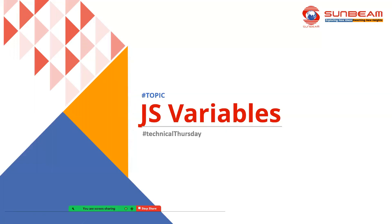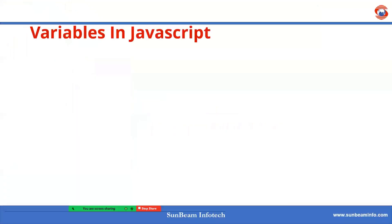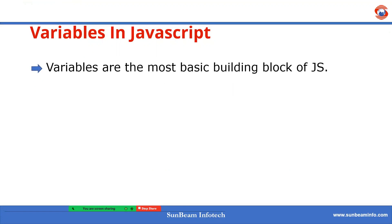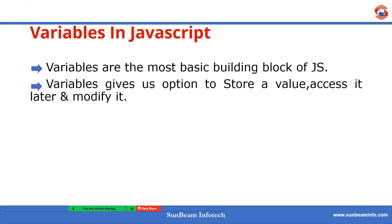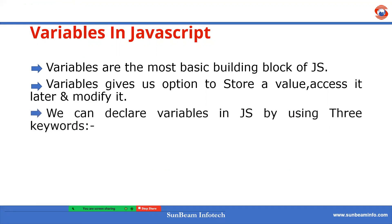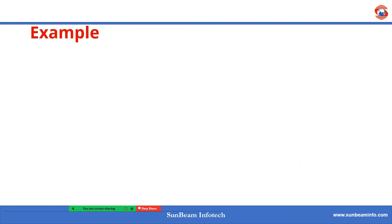Hello all, today we are going to discuss about variables in JavaScript. Variables are the most basic building block of JavaScript. Variables in JavaScript are not unique because pretty much every programming language uses them. Then why variables? Variables give us the option to store a value, access it later, and modify it. In JavaScript, we can declare variables by using three keywords. Those keywords are var, let, and const. To see the beauty of variables in JavaScript, let us dig into one programming example.